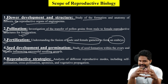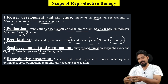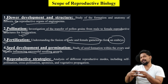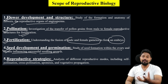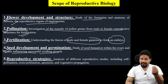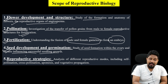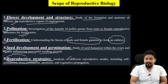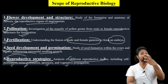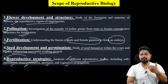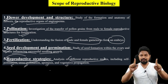Seeds germinate, and we cover seed development and germination. We also look at reproductive strategies — analysis of different reproductive modes including self-pollination, cross-pollination, apomixis, and vegetative propagation. Next week we will know about the details of reproductive biology.